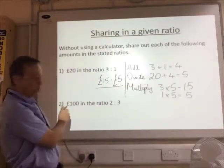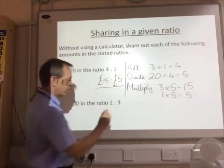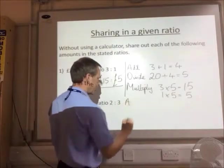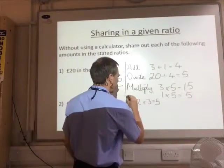So on this question here, number 2, £100 in the ratio 2 to 3. So the first thing, add 2 plus 3 equals 5.